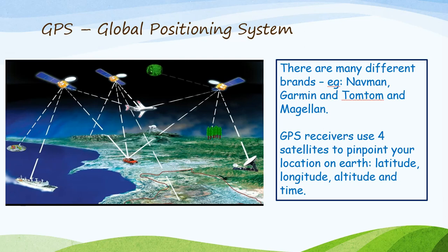GPS stands for Global Positioning System. There are many different brands, for example Navman, Garmin, TomTom and Magellan. GPS receivers use four satellites to pinpoint your location on earth: latitude, longitude, altitude and time.